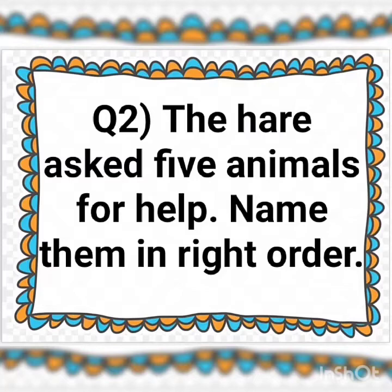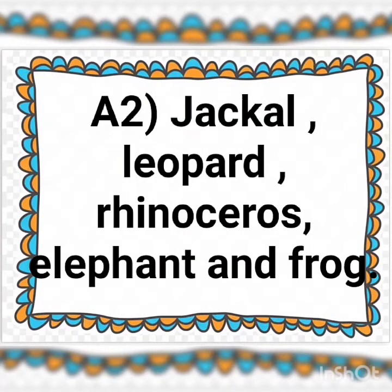So first of all, who came? The hare met the leopard — kisse mila tha? Leopard se mila tha. And after leopard, wo kisse mila? Rhinoceros. Rhinoceros ke baad wo mila tha elephant se. Aur ant mein wo kisse mila? Frog. Toh yeh the wo five animals jisse wo mila tha — leopard, rhinoceros, elephant, and frog.